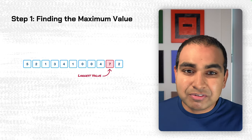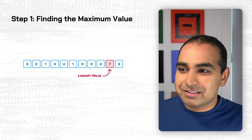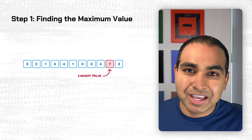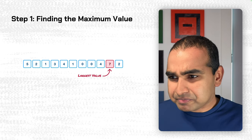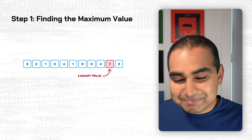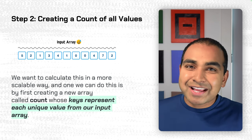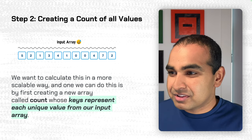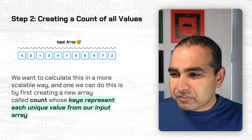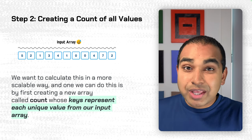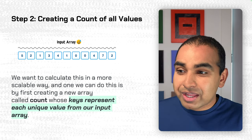Step one: we find the maximum value, which in our case is the number seven — the largest value in our currently unsorted input. That's it for step one. Now we go to step two: we create a count of all the values in a scalable way by creating a new array called count.